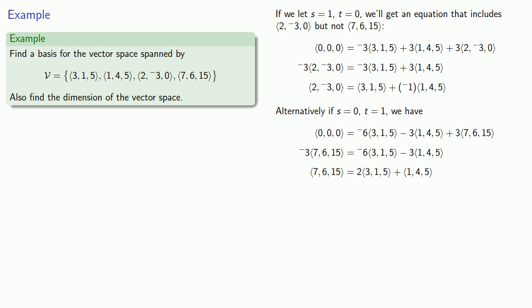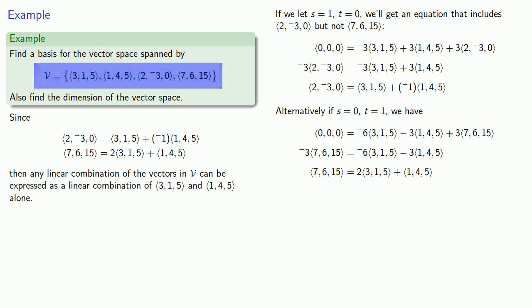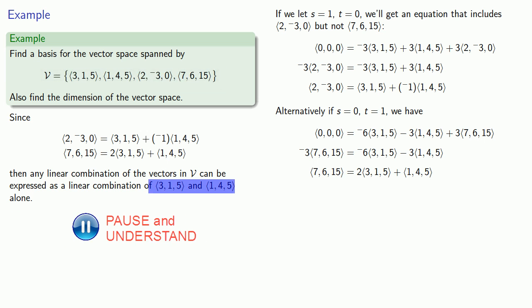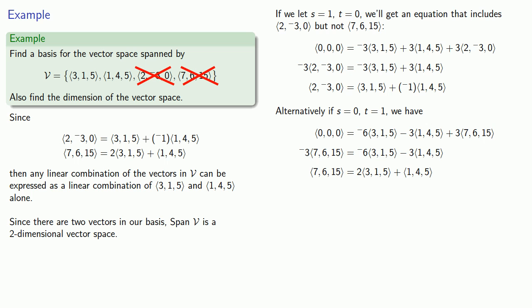And what that means is that I can write my vector (2, -3, 0) as a linear combination of (3, 1, 5) and (1, 4, 5). And likewise, I can write the vector (7, 6, 15) as a linear combination of (3, 1, 5) and (1, 4, 5). So any linear combination of the vectors in my set can be expressed as a linear combination of these two vectors alone. And I don't need these two vectors. And so that means there are two vectors in our basis. And span V, the vector space spanned by this set of vectors, is a two-dimensional vector space.